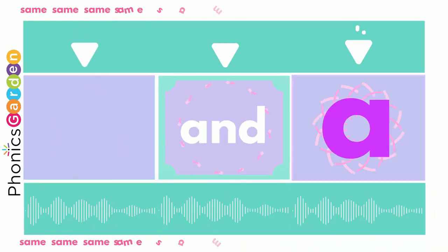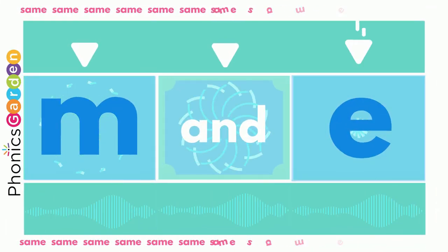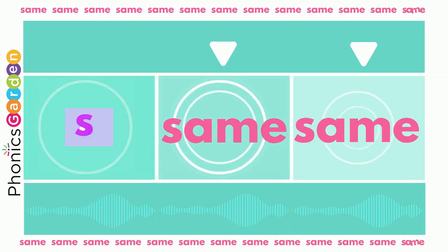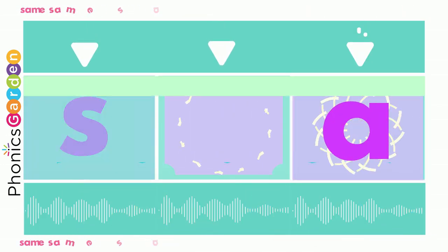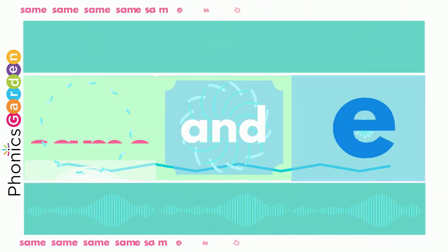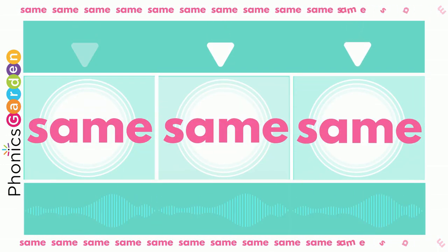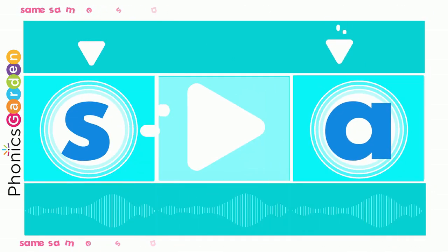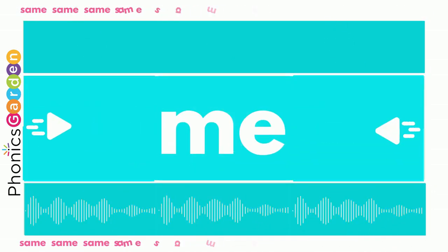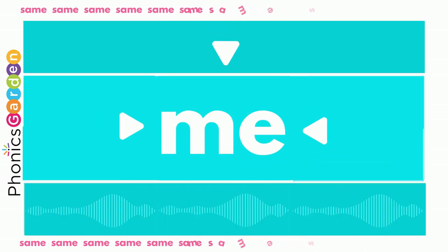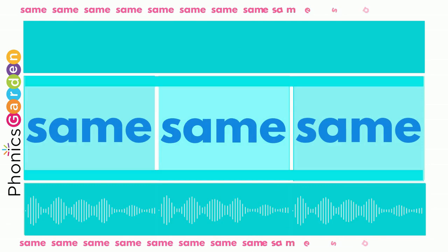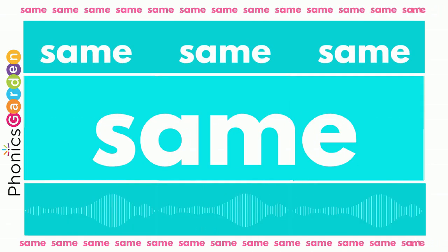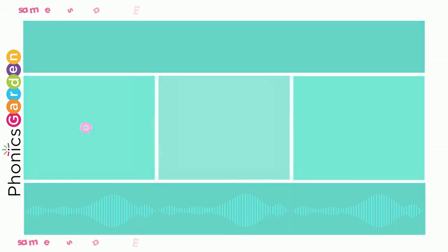S-A-M-E, same, same, same. Use the S, use the A, end it with M-E. Now you've made the new word, same for me.